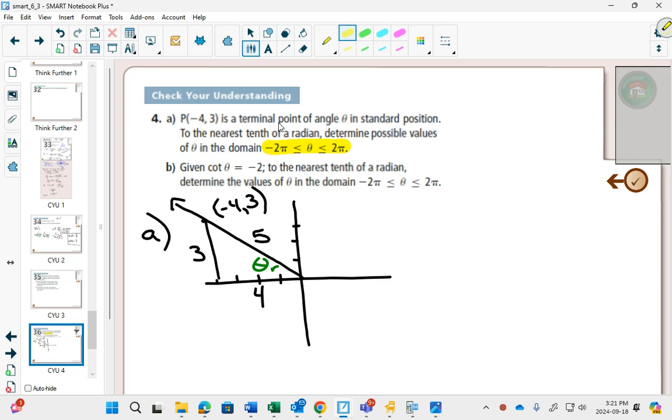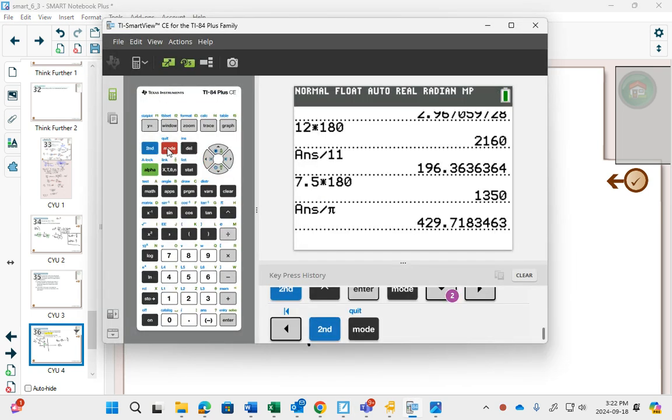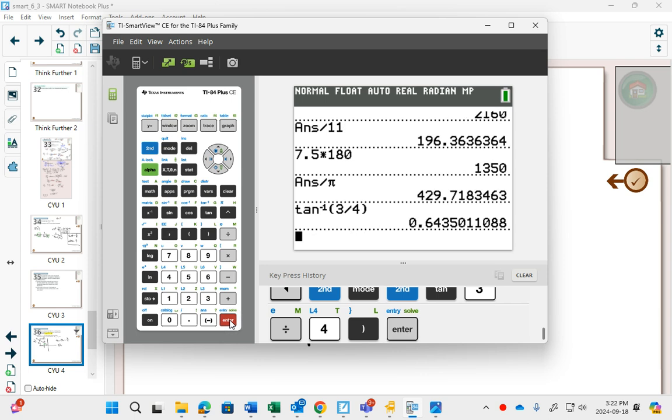So if I did tan of my reference angle, opposite is three, adjacent is four. I go to my calculator. It's in radians already. So I can go second tan inverse three divided by four, just the same as you would in degrees, except you get an answer that you're not as comfortable with.